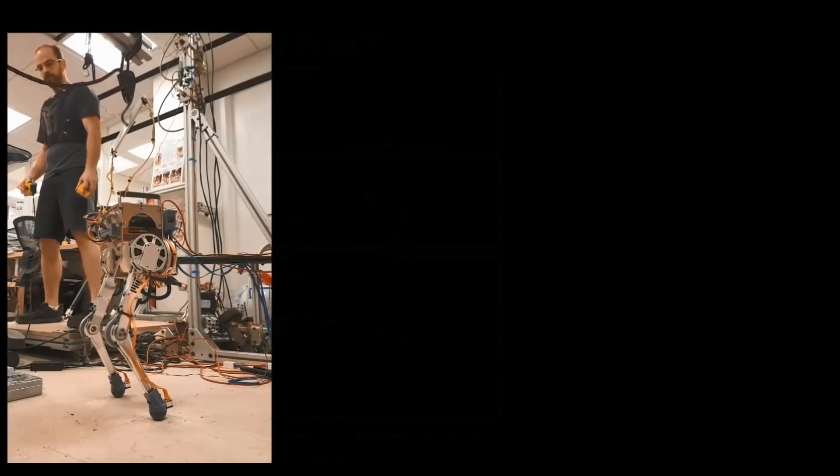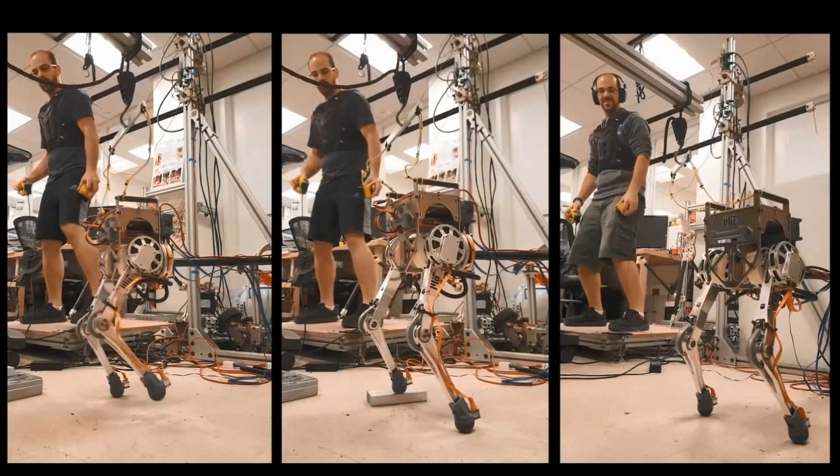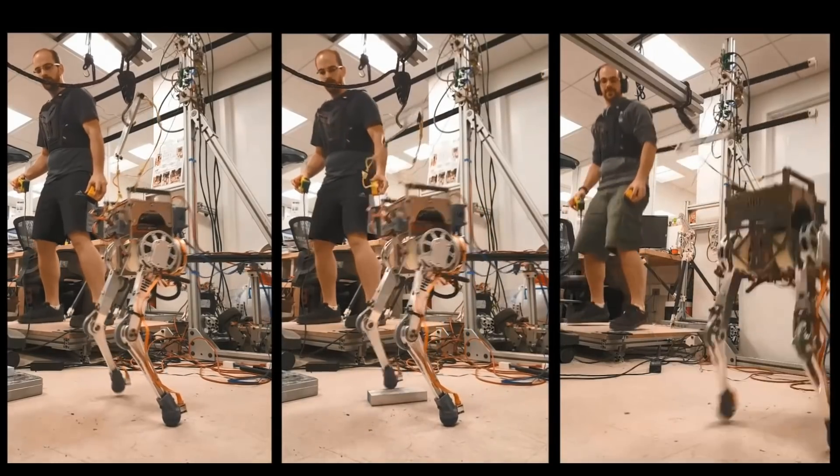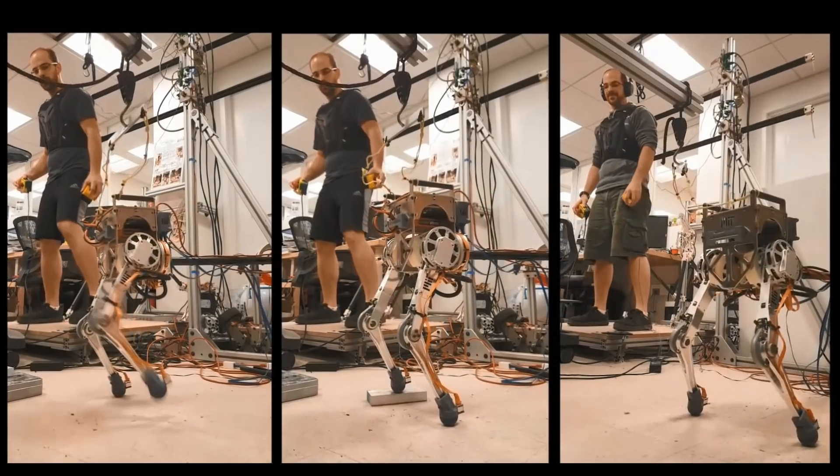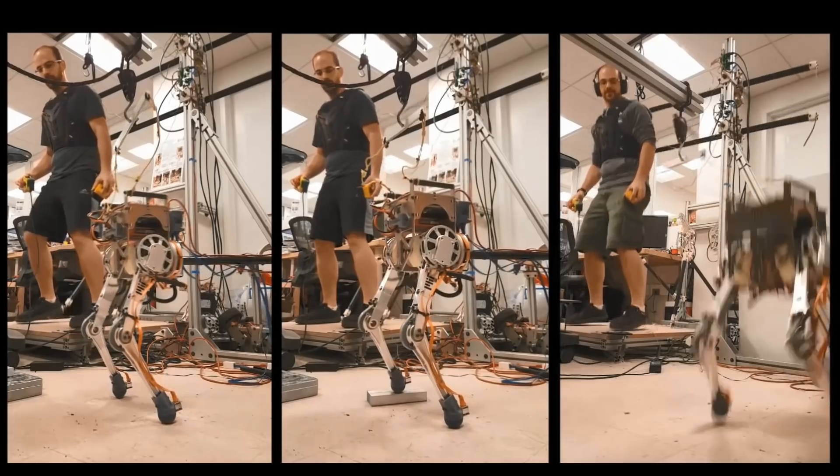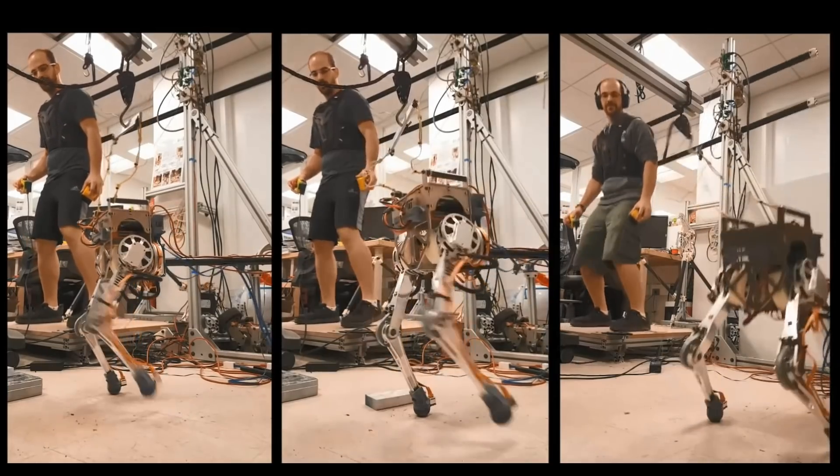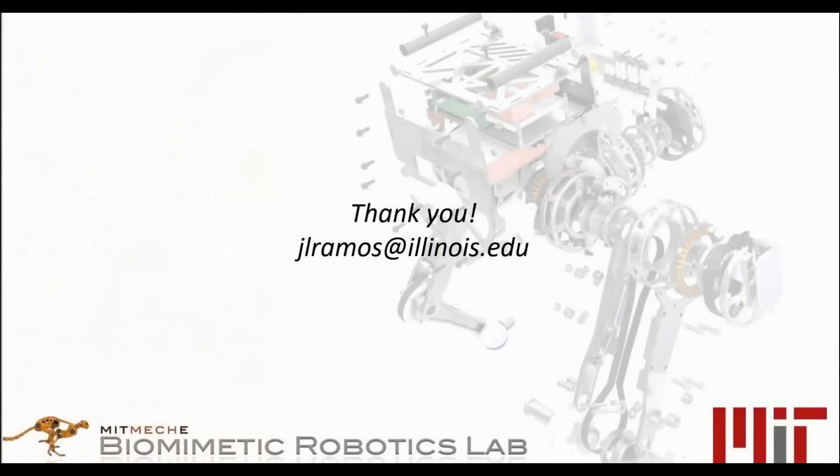When human and machine are dynamically synchronized via teleoperation, the operator commands the bipedal robot to take steps in place or even jump. These results represent a fundamental solution to combine human motor control intelligence with the physical robustness of robots.